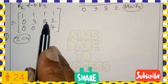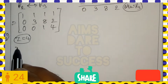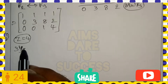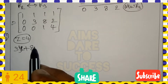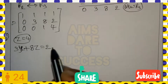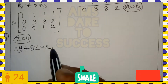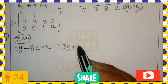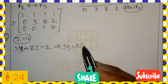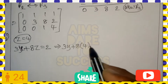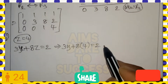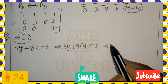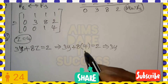From the third row, the z-related coefficient is 1 and the right-hand side is 4, so z = 4 directly. From the second row, we have 3y plus 8z equals 2. Substituting z = 4: 3y plus 8 times 4 equals 2, giving 3y plus 32 equals 2.